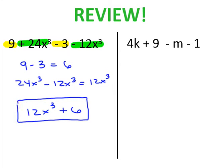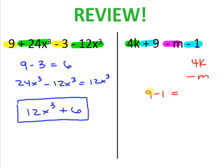For the next one, I have a 4k, a positive 9, a negative 1, and a negative m. So 4k cannot combine with anything, neither can my negative m. But then I have 9 minus 1, which is 8. All of my powers are 1, so I'm going to put it in alphabetical order: 4k minus m plus 8.